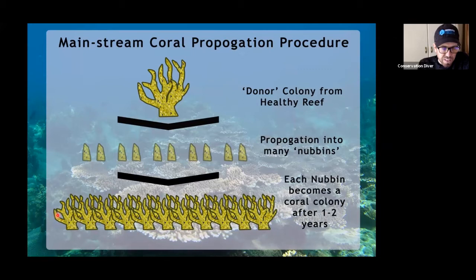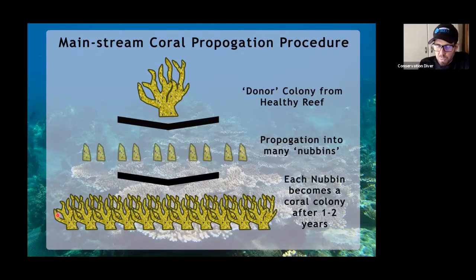It was 48 plus 20 — so like almost 70 percent of the restoration projects in the world are using asexual methods. What the mainstream coral propagation procedure is: you go and you find a nice healthy coral.